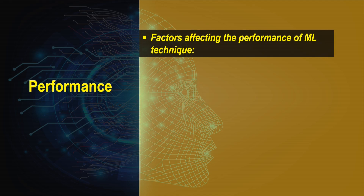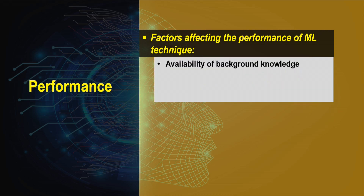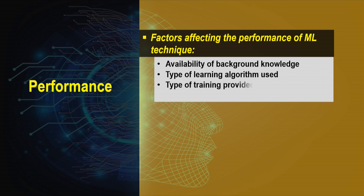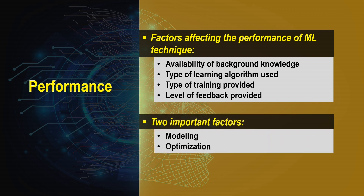Several factors affect system performance: any initial background knowledge available will impact performance; the choice of learning algorithm affects results; the type of training method used can improve or reduce performance; the type of feedback provided is another influencing factor; and modeling and optimization choices also affect the final model's performance. All these factors must be considered when selecting, evaluating, and deploying the model.